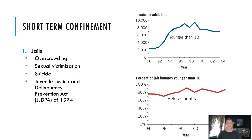Looking at short-term confinement, the first one is jails. There's a lot of overcrowding in these facilities, there's the potential for juveniles to be sexually victimized, and they have increased rates of suicide. The Juvenile Justice and Delinquency Prevention Act of 1974 required states to remove juveniles from adult jails and lockups by 1989. They have not been completely removed up until today, but most youth have been moved into detention facilities specifically for juvenile offenders.